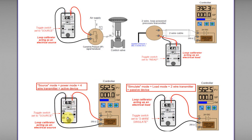This loop calibrator switch is set to source mode. As mentioned earlier, source mode will act as an electrical source — it will provide the power to power the whole loop, and at the same time inject a signal. So it is actually no different from a four-wire transmitter. Since this is the electrical source, the controller will act as an electrical load.